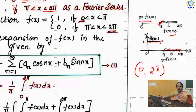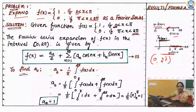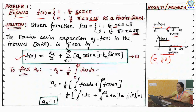Now we have to write the Fourier series expansion for this discontinuous function. What will be your formula? Your formula is f of x equal to a0 by 2 plus sigma n equals to 1 to infinity, a_n cos nx plus b_n sin nx. That will be equation 1.